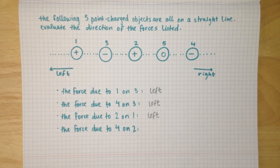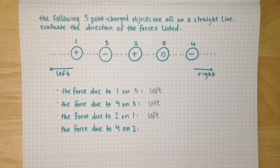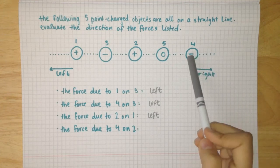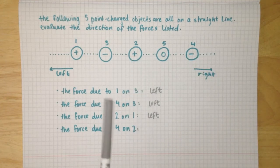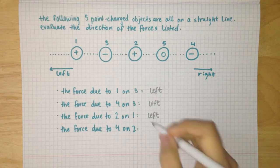And the force due to four on two: four is negative and two is positive, so opposites attract. Four is wanting two to come towards it, so this one will be to the right.